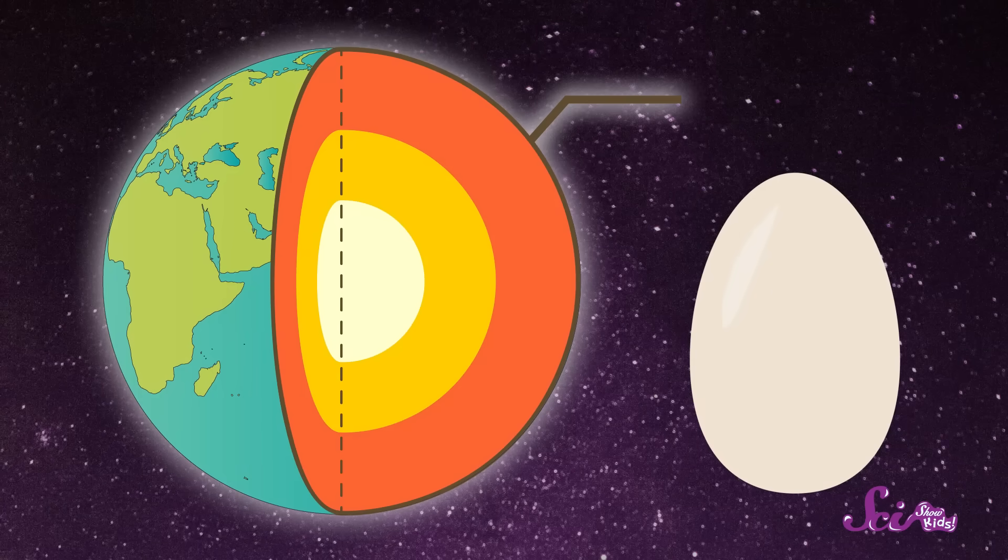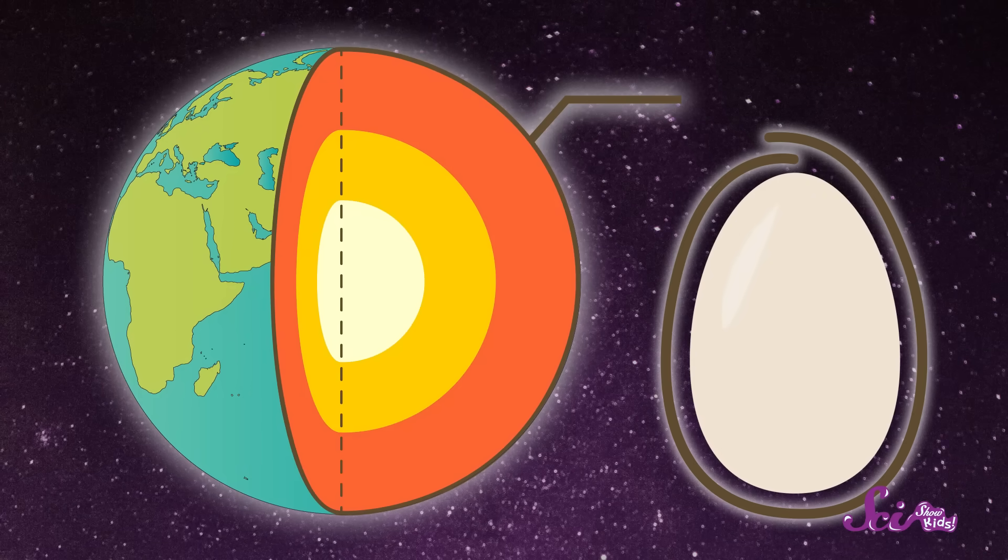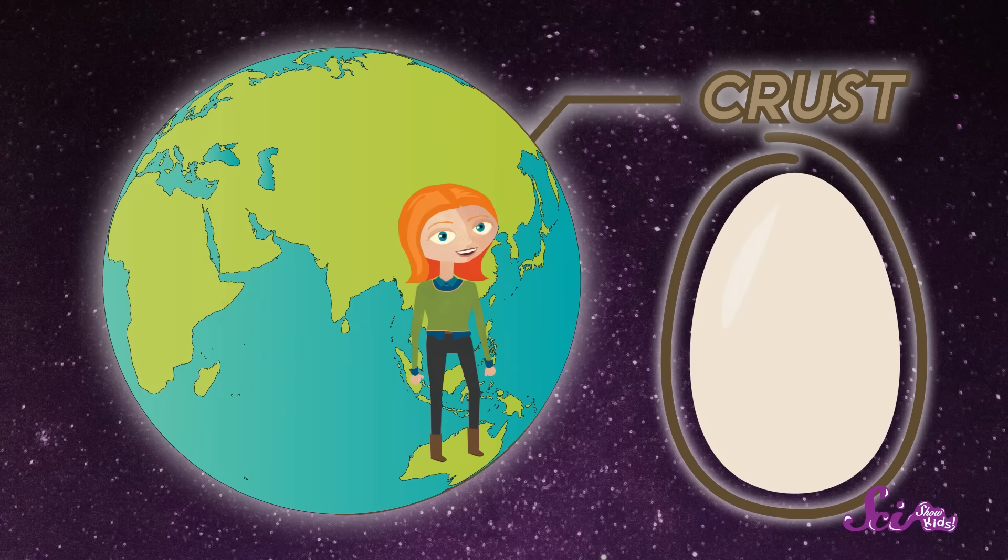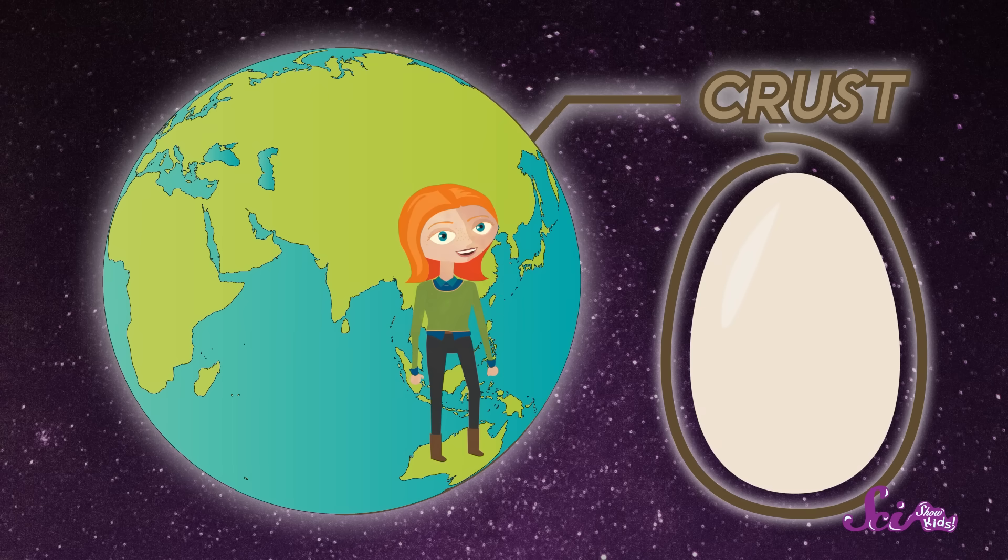You can think of Earth's top layer as being like the shell of an egg. This layer is called the crust, and it's what you're standing on right now. The crust covers all of Earth's surface.